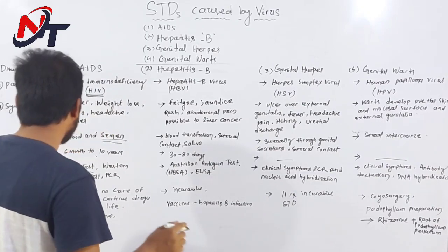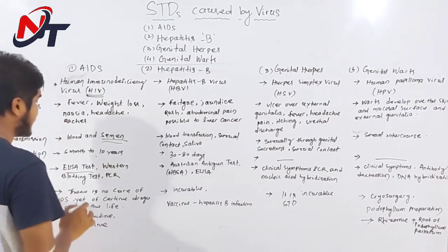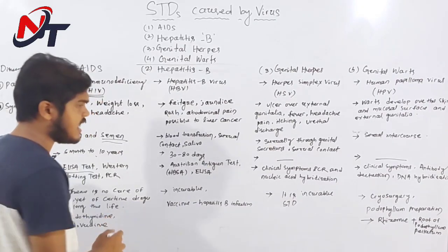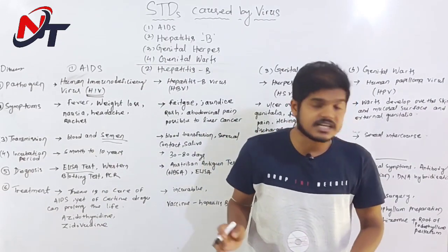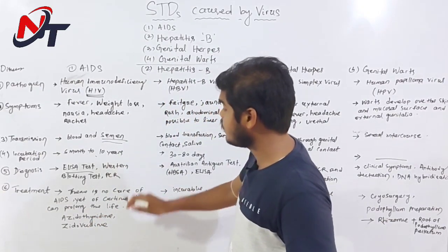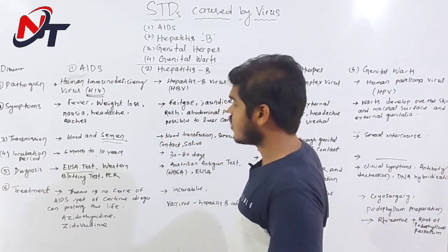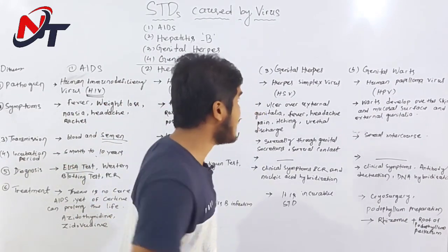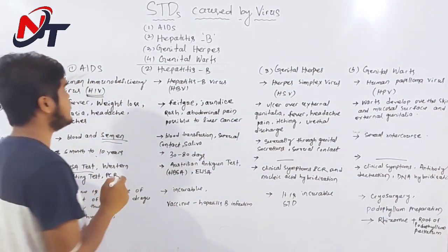For treatment, we don't have a cure for AIDS. There is no cure, but certain drugs can prolong life. The patient is given medicine such as AZT (azidothymidine). While life can be extended with medication, AIDS is not curable.